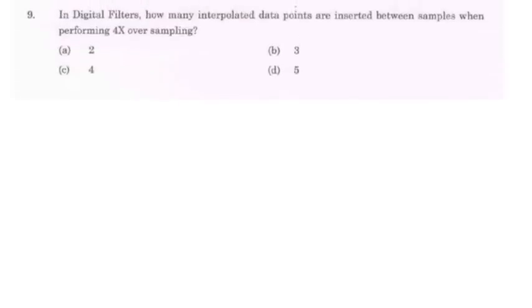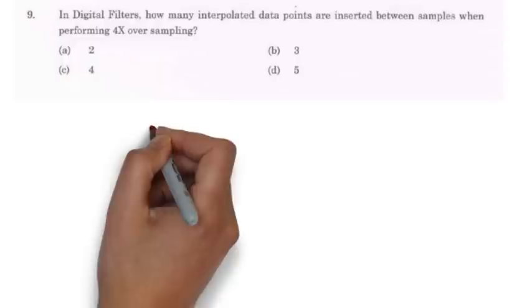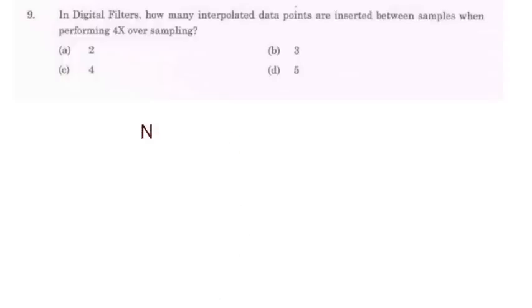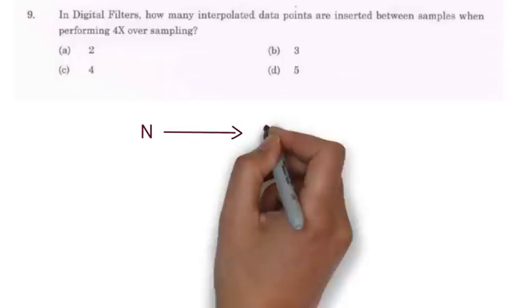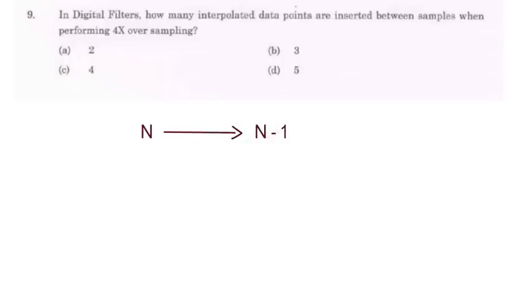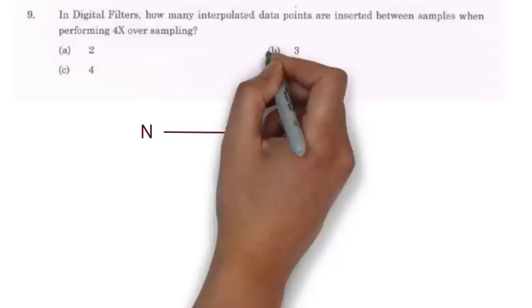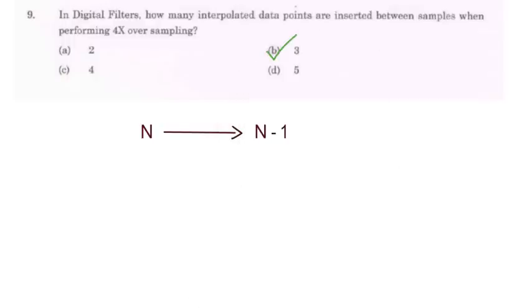Next question is from digital filters. They have asked how many interpolated data points are inserted between samples when performing 4x oversampling. So this is a case of oversampling where if we perform n oversampling then number of data points that are inserted is n minus 1. Here n equal to 4 so option B that is 3 will be the right answer.